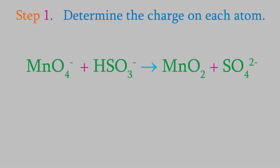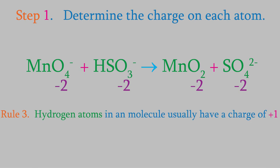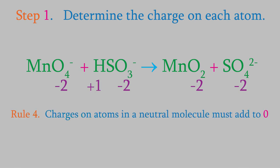The first step is to determine the charge on each of the atoms in the compounds. We learned some rules for figuring out the charges last time. Rule 2 tells us that oxygens in molecules have a charge of minus 2, so that takes care of all the oxygens. Next, rule 3 says that hydrogens in a molecule have a charge of plus 1, so that includes the hydrogen in the bisulfite. Rule 4 says that the charges of atoms in a neutral molecule must add up to 0. There's just one neutral molecule, the manganese oxide. To make the charges add to 0, the manganese must have a charge of plus 4.